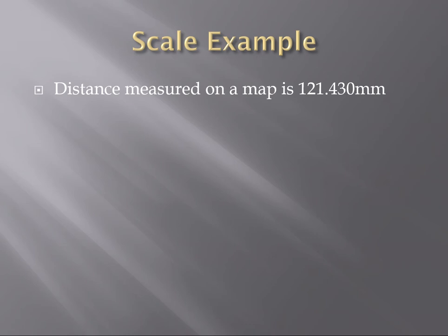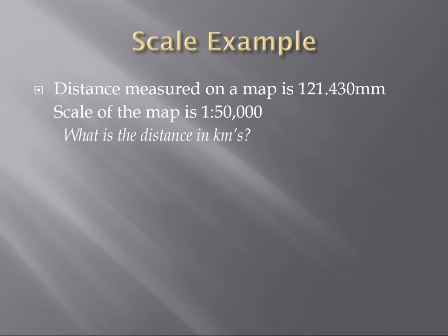So I'm going to get you guys to think about this in terms of numbers. A distance on a map is 121.43 millimeters. The scale of the map is 1 to 50,000. So we're trying to calculate the distance on the ground. What is the distance on the ground in kilometers?